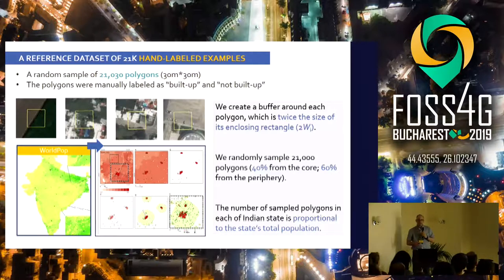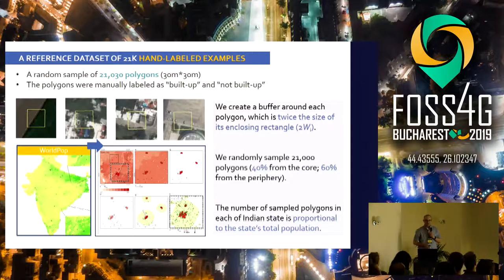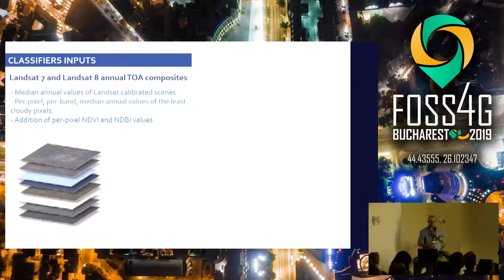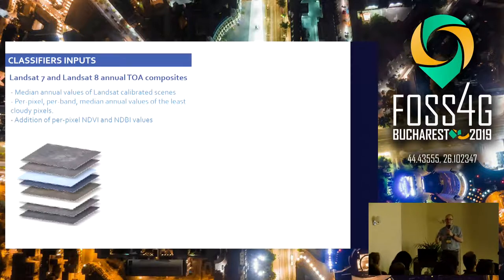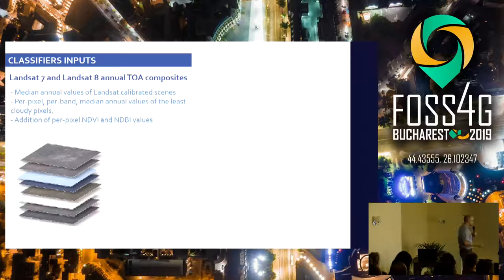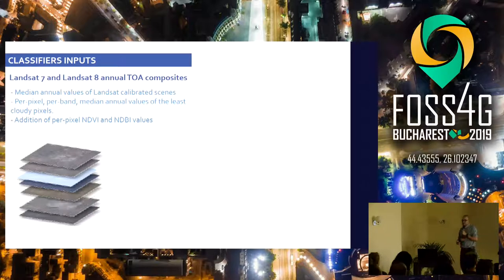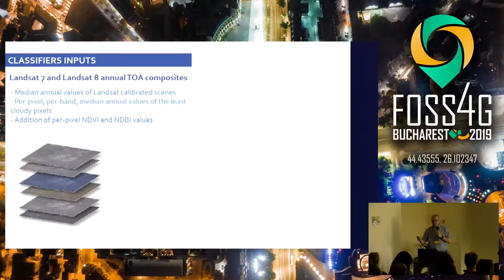This is the response, the labels — what we want to predict. For the input data, we used Landsat data. Landsat is collecting data from every location on Earth every 16 days, but some of the scenes have a lot of cloud coverage. So we need to remove those scenes that have more than 10% cloud coverage. Then for each pixel, we calculate the median value, which represents the median value of the pixel over the year.